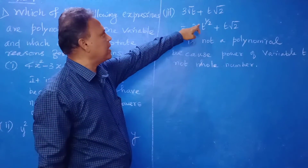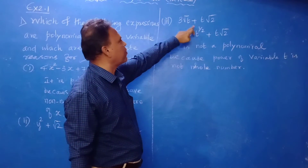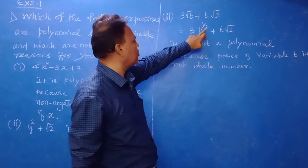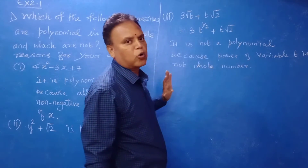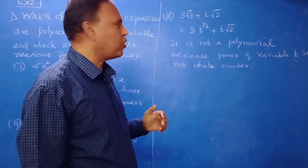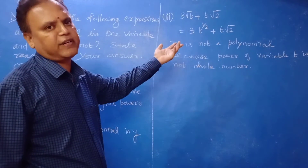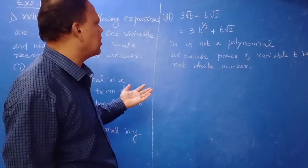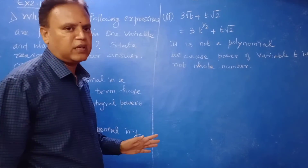Third: 3 root t plus t root 2. This can be written as 3 t power 1/2 plus t times root 2. Therefore it is not a polynomial, because the power of variable t is not a whole number — it is a fraction (1/2).